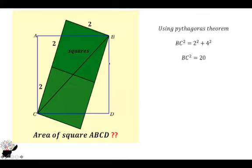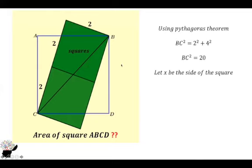Now let us represent the side of the bigger square by x. So let x be the side of the square. AB is x, AC is x, CDB is x, and DB is also x. Using the Pythagorean theorem, we already know the hypotenuse. AB is x and AC is also x, so we get x² + x² = BC², and BC² — the diagonal of the bigger square, which is the same as the diagonal of the two smaller squares — is 20.